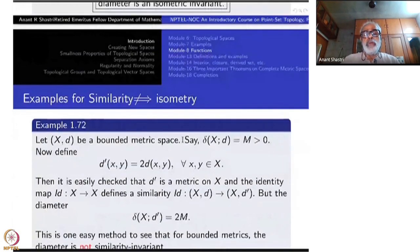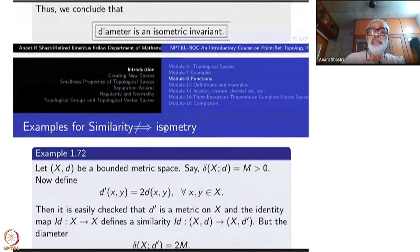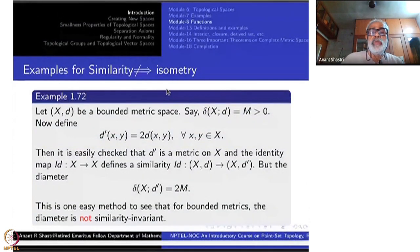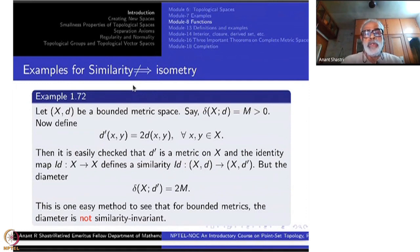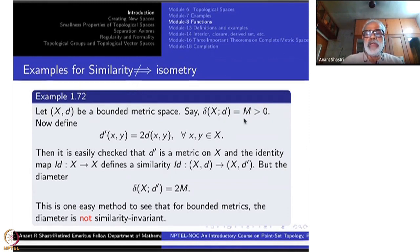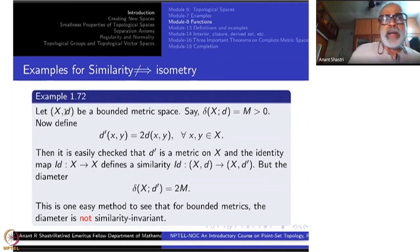We can use diameter — not just boundedness, but more fragility — to show that similarity does not imply isometry. Let (X, d) be a bounded metric space so that the diameter is finite; put δ(X, d) = m, where m is positive (since we take X to be non-empty).